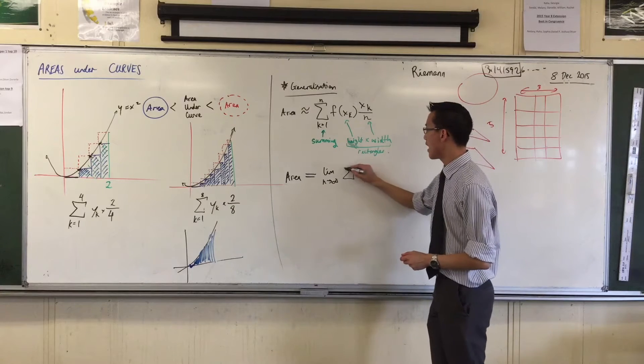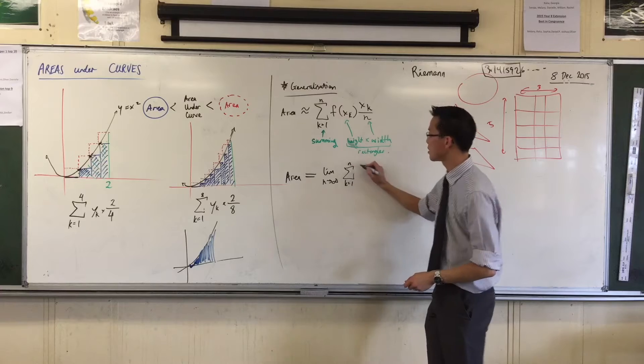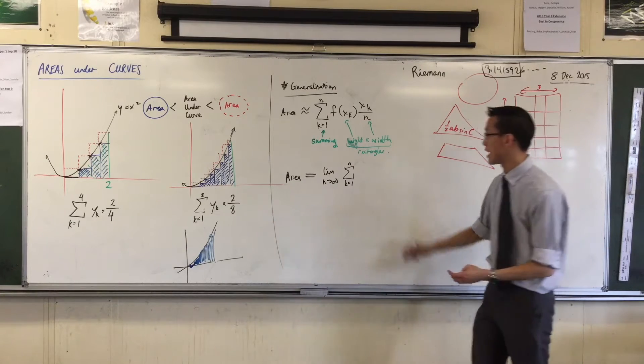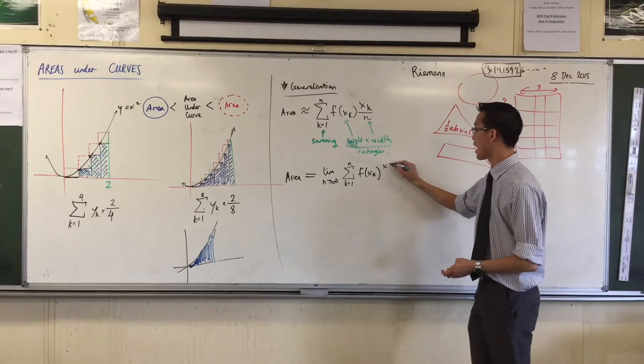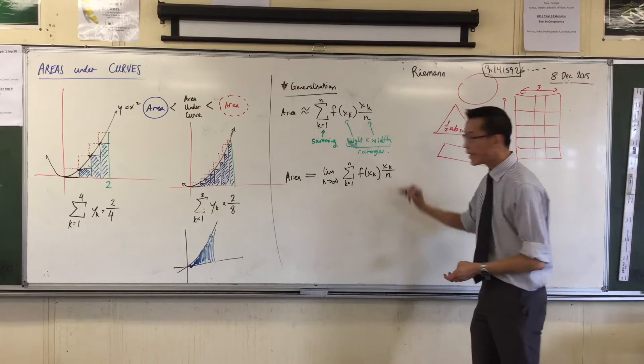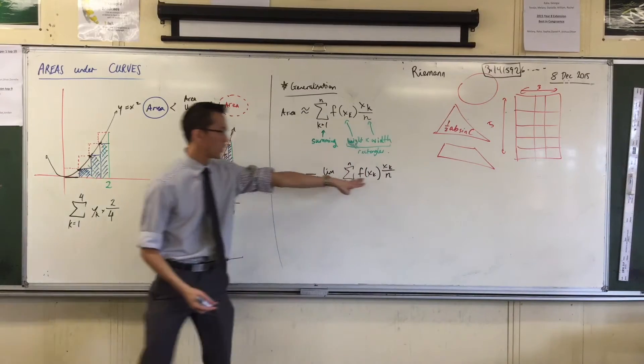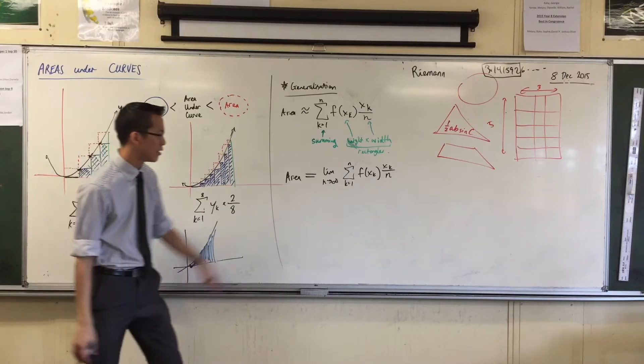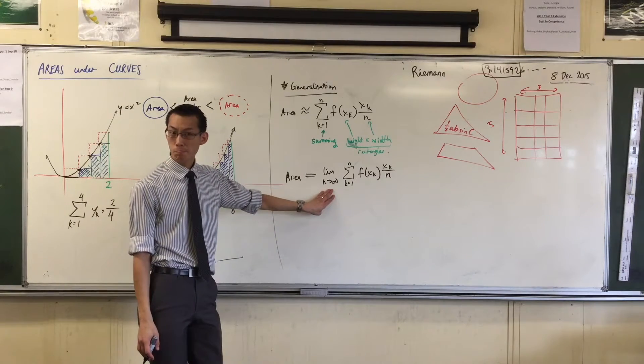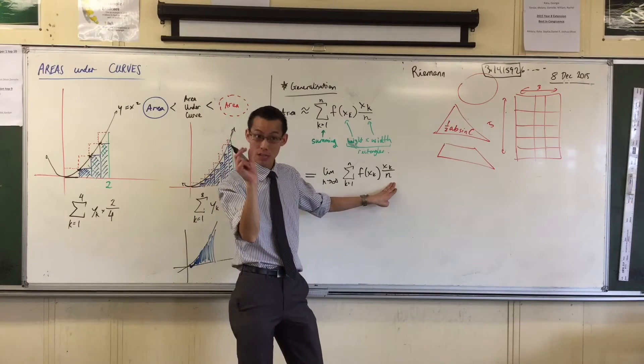And then I need to add up all of this. I've got to add up all of these, all these little rectangles. They're still going to have the same height, and they're still going to have the same width, but amazingly, look at the width, you see how it has n in it. The width is dependent on n. What happens as n approaches infinity, this thing here, the width is going to approach zero.